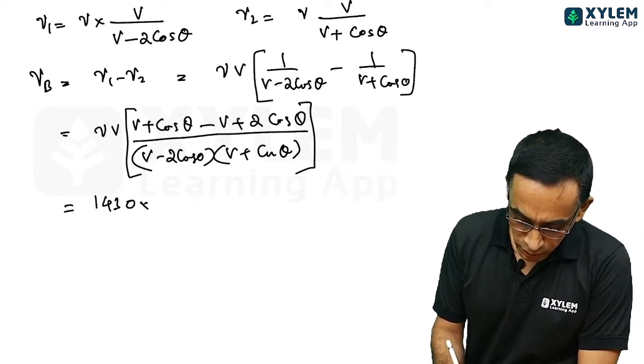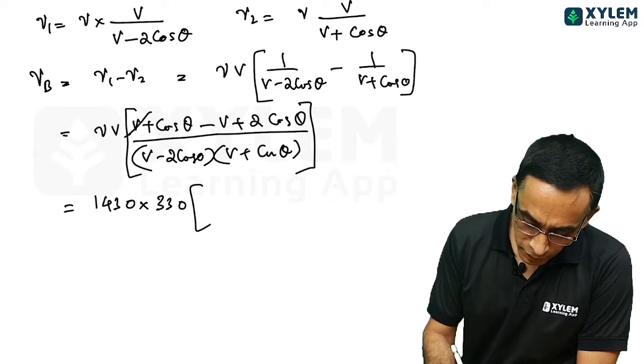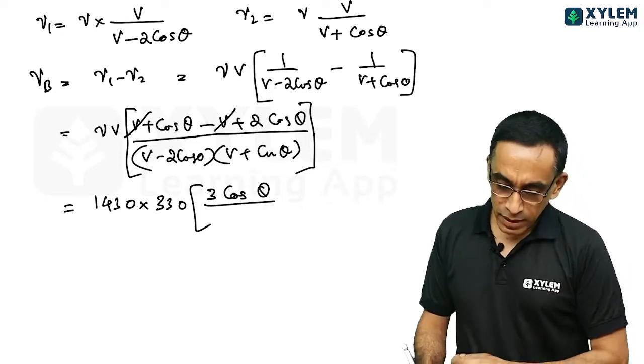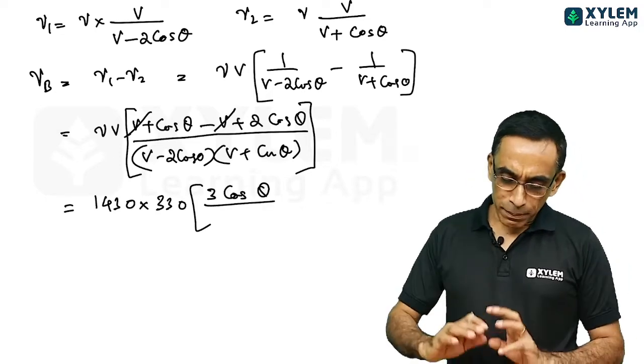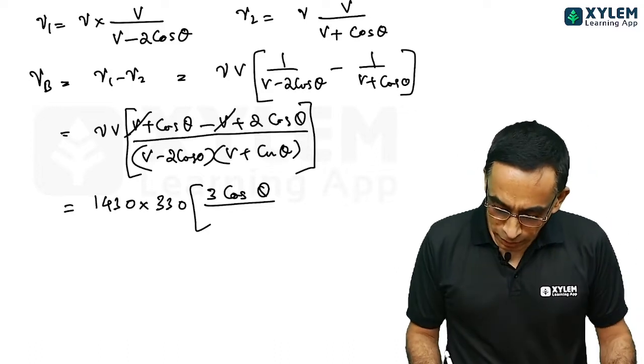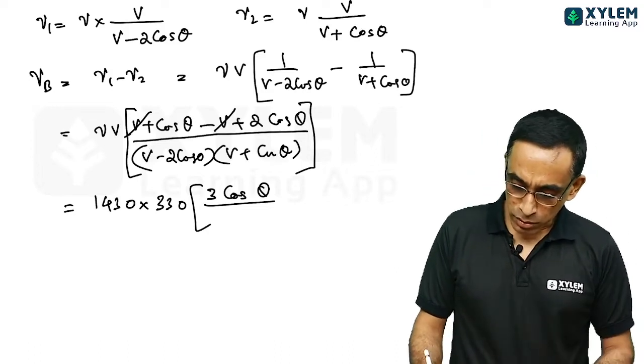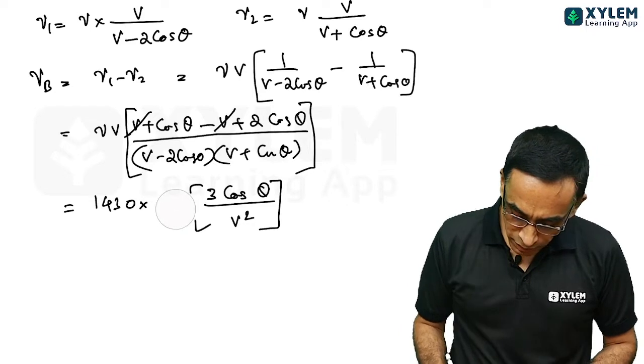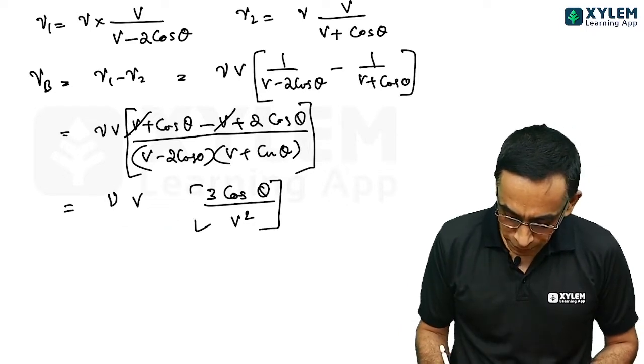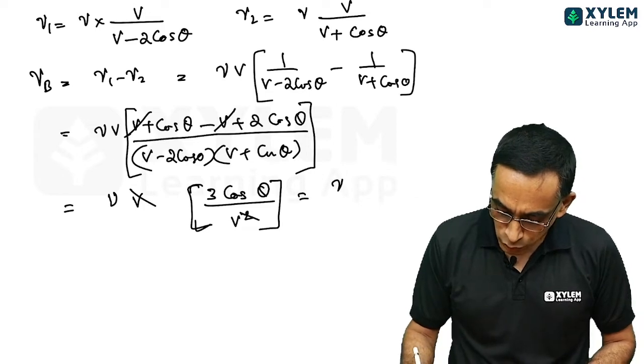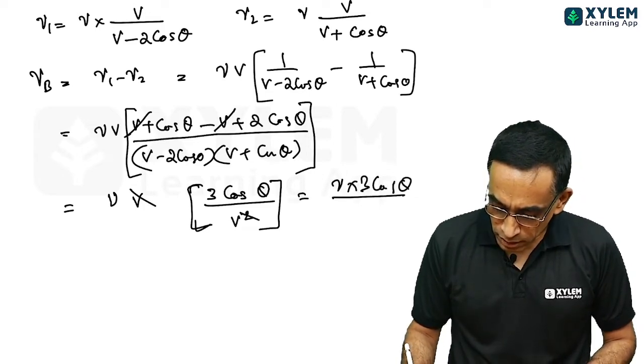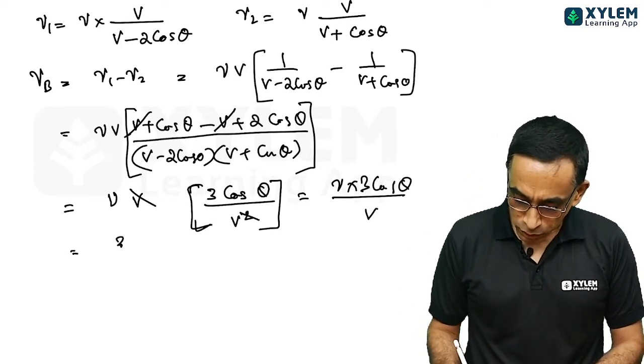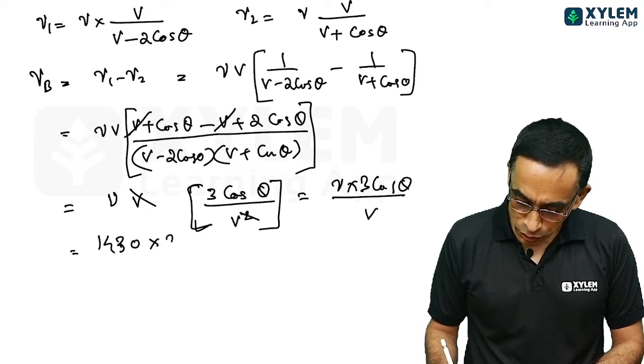Calculation part is not very easy. Nu is 1430. Speed is 330. Bracket v and v cancel. You get 3 cos theta divided by, in the denominator, you can make an approximation. V minus 2 cos theta is the small value. And v plus cos theta. This will be approximately v square. One second and you could have value in the middle. Let us put it as nu and v. One of this will cancel. This will give you nu into 3 cos theta divided by v.